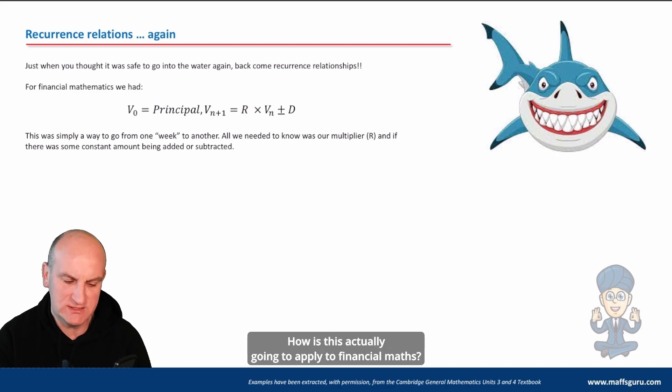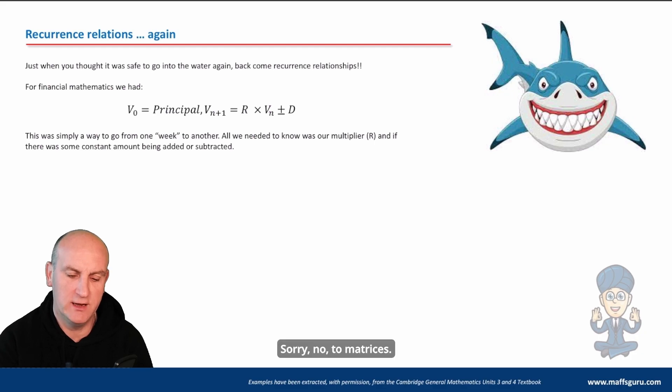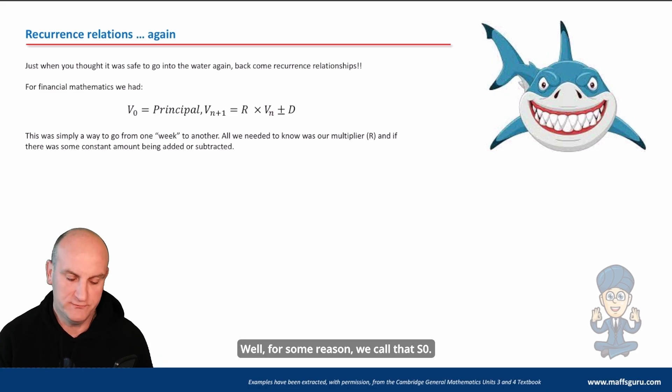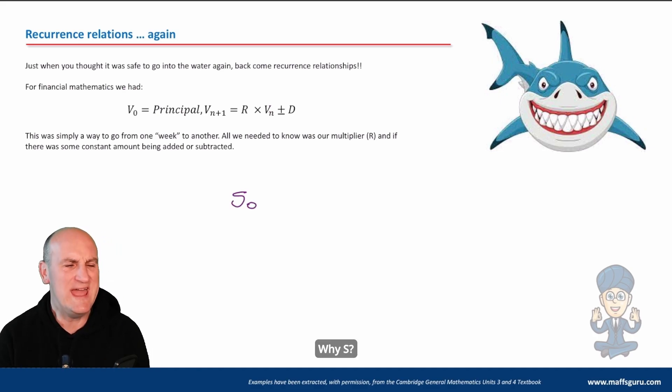Now let's go back to this. How is this actually going to apply to matrices? Well, we need an initial amount. I'm going to open my car hire company with a certain number of cars. So what would we call that? Well, for some reason we call that S₀. Why S?